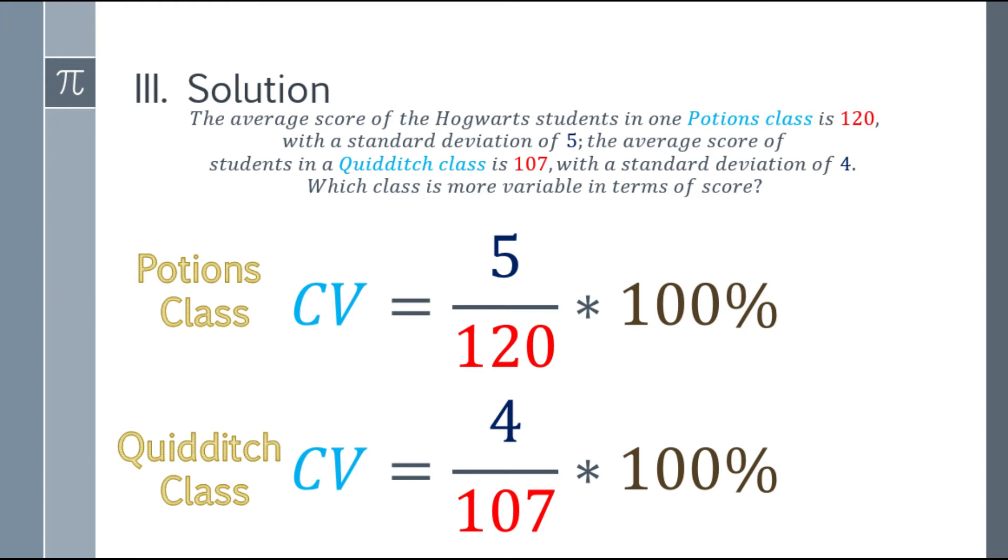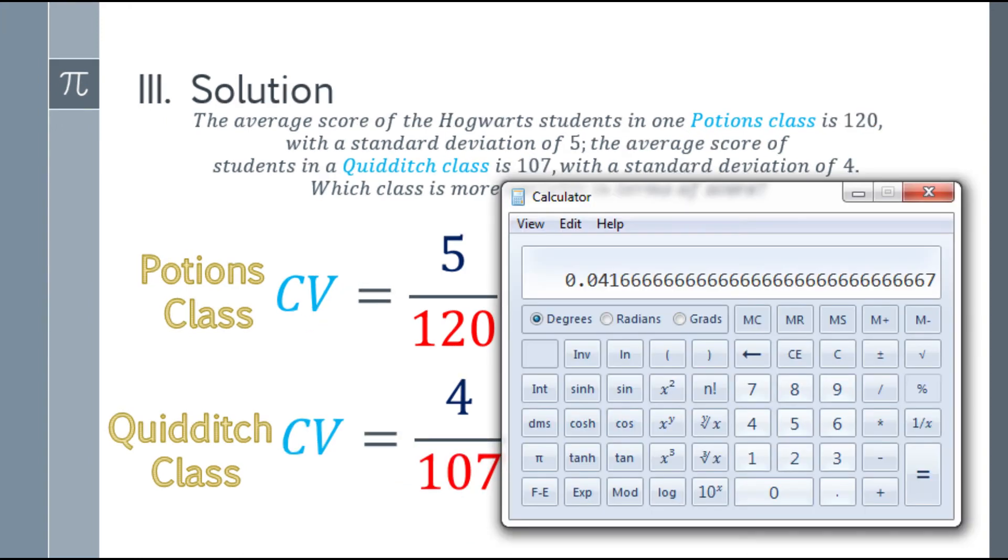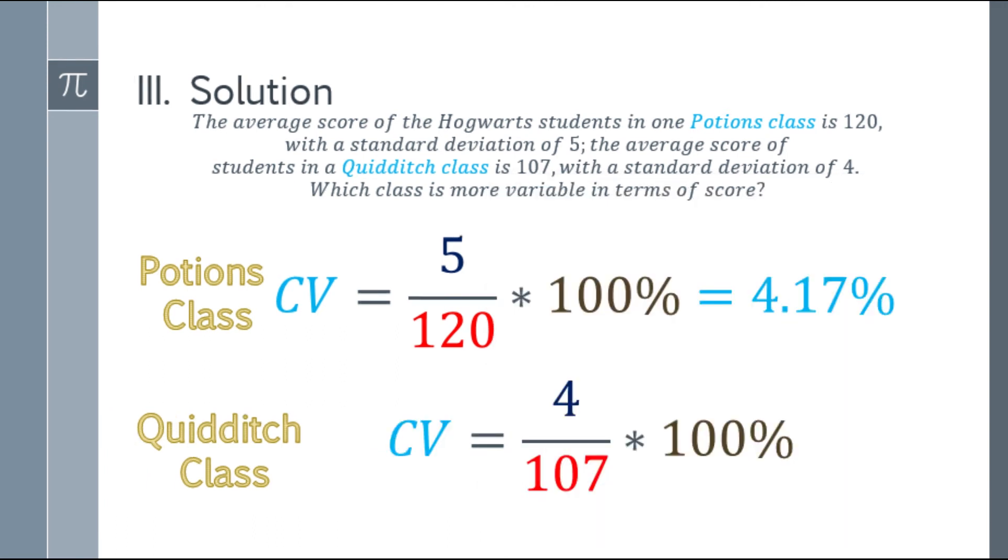So enter it in the calculator, that will be 5 divided by 120. You will get an answer of 0.0416 repeating decimal. Then you have to multiply it by 100 and add the percent sign, and round it up. That will be 4.17%.